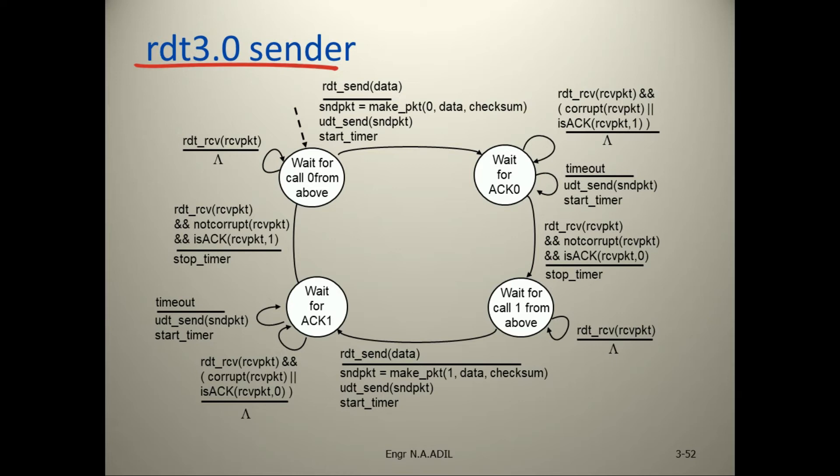Again the sender waits for call 1 from above. If RDT receive does nothing, it waits for call 1 from above. When RDT send data is called again, the sender makes a packet with sequence number 1, adds data and checksum, sends it, and starts the timer.